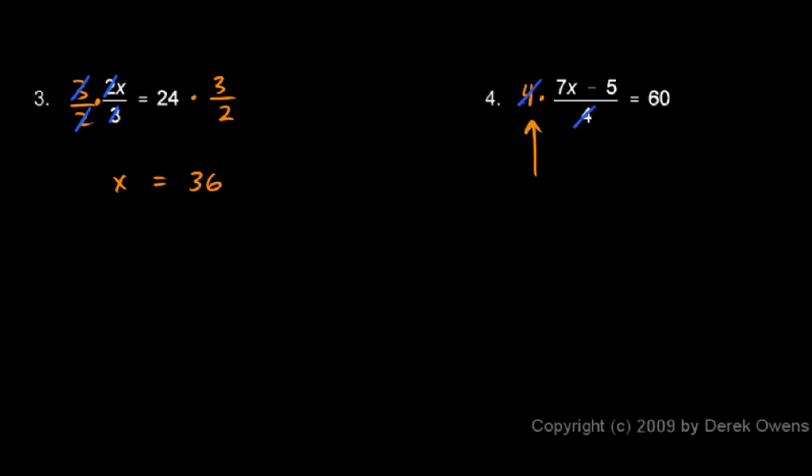And if we multiply by 4 on the left, we have to multiply by 4 on the right. So let's write what this results in now. This gives us 7x minus 5 equals, on the right we have 60 times 4, which is 240.